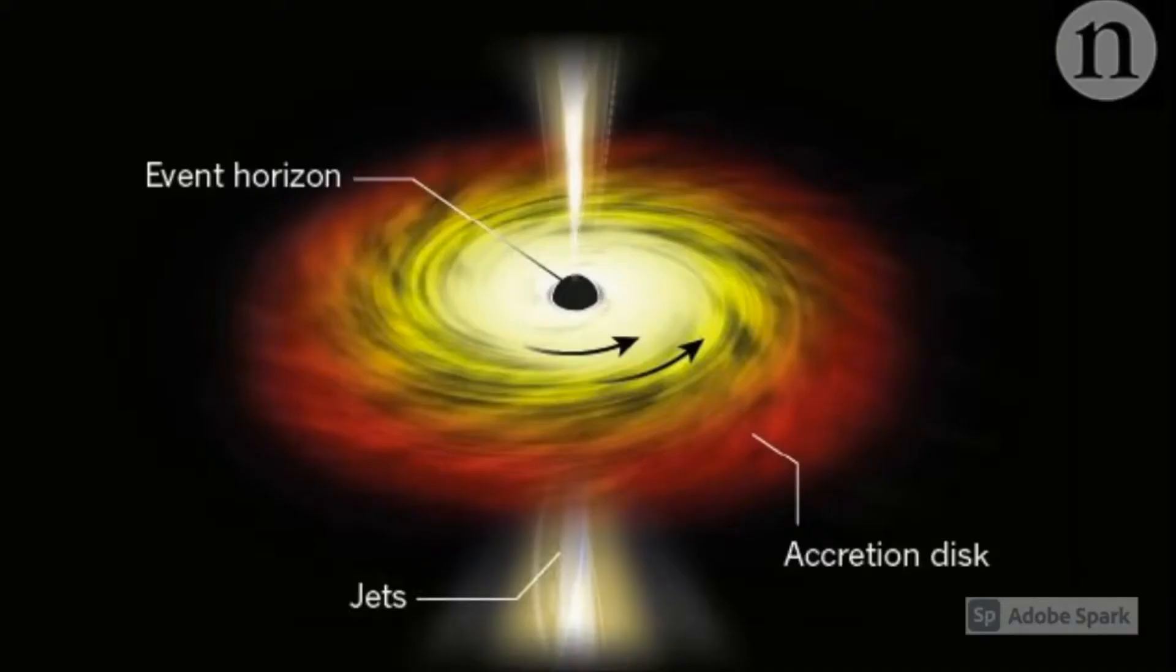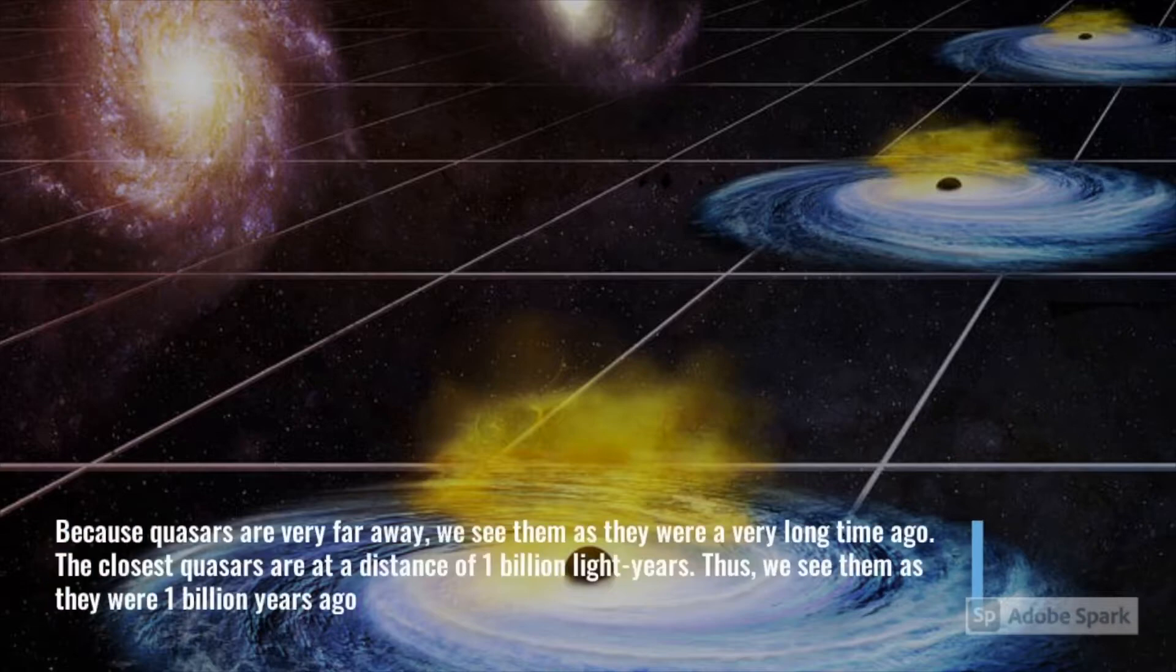Quasars are among the brightest celestial objects that are crucial to understand how the early universe looked like. Now, why am I using the term early universe? Because quasars are so luminous that they are visible even at a distance of billions of light years. What quasar we are seeing right now was in that state billions of light years ago.